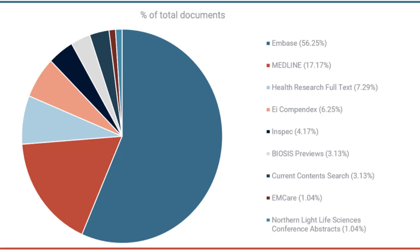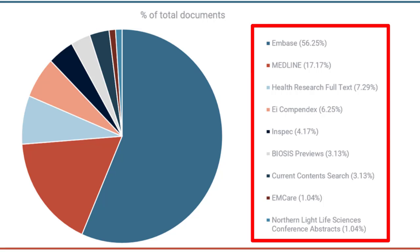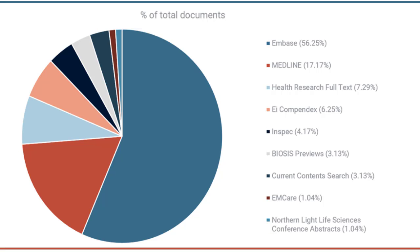To summarize: the guidelines say don't just rely on Medline — you may also want to consider Embase and Cochrane. Cochrane is not available as a standalone database on Dialog, which is why it's not in this list, but Cochrane does appear in Medline, so you will be getting some Cochrane coverage.